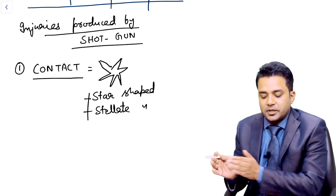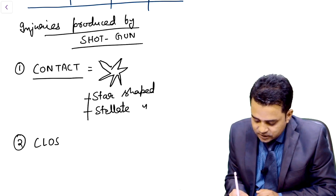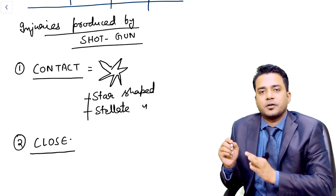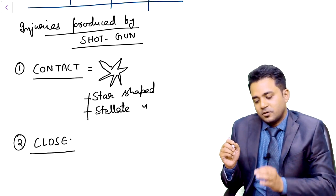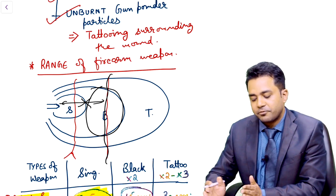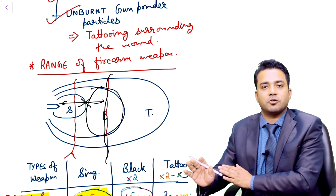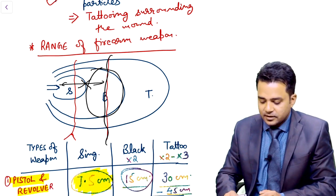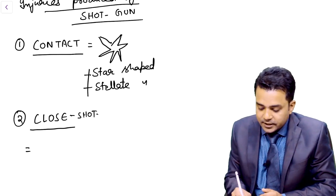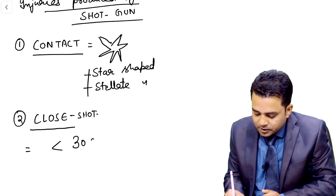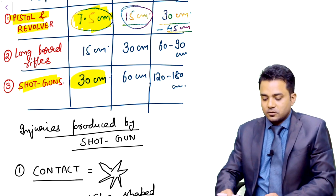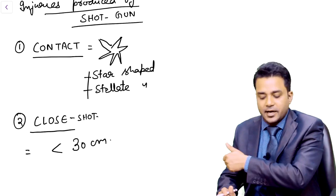If you increase the distance, the wound is classified as a close shot. This year's All India question: a firearm wound showing singeing, blackening, and tattooing — what will be the wound type? Singeing is seen at a closer distance; when the victim moves away, singeing vanishes and you can get only tattooing and blackening. If all three are present, the range is close shot. In case of shotgun, close shot is at a distance less than 30 cm, and the entry wound shape will be oval.